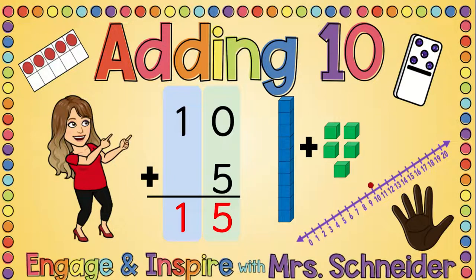Today we're going to be learning how to add 10 to a single digit number. That's a number between 0 and 9: 0, 1, 2, 3, 4, 5, 6, 7, 8, and 9.